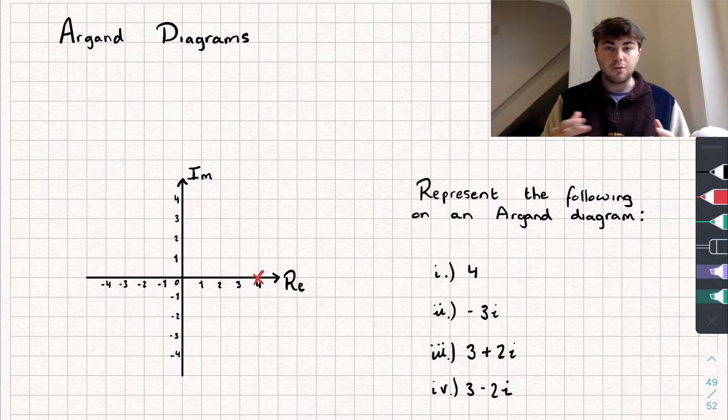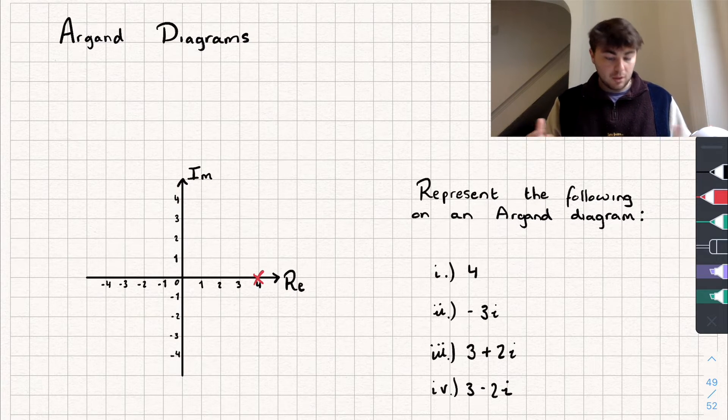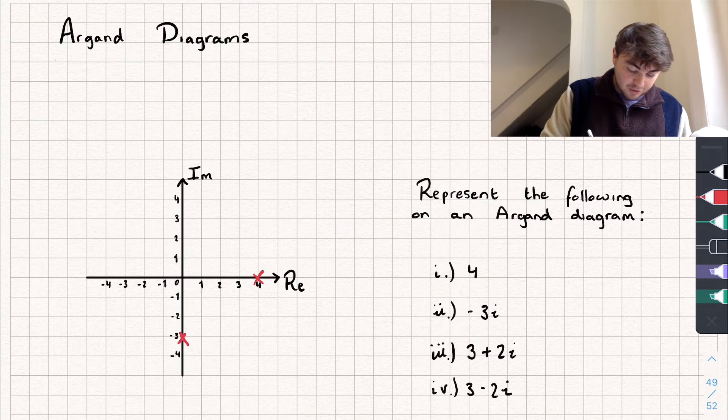Next we'll look at negative 3i, which is an imaginary number, so it's going to be at negative 3 on the imaginary axis.